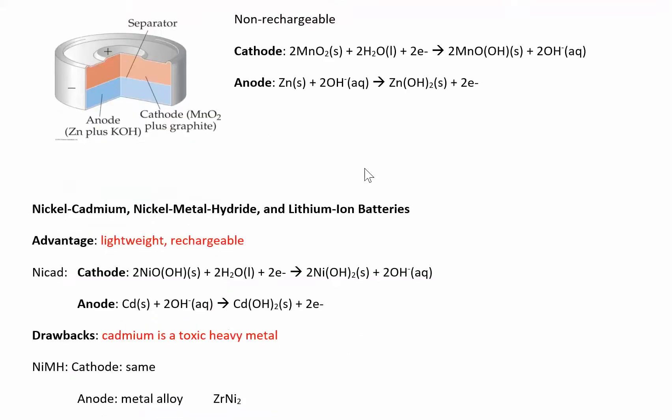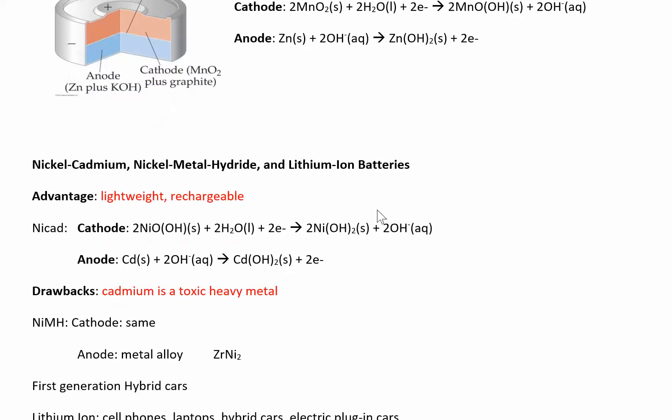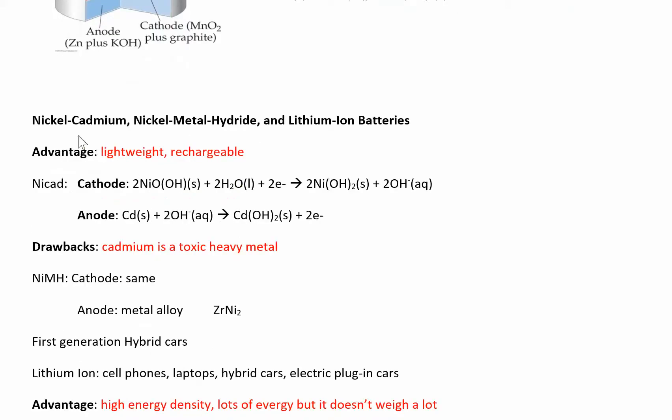Nickel cadmium, nickel metal hydride, lithium ion batteries - the first generation of rechargeable batteries were these nickel cadmium, NiCad batteries. I remember my first rechargeable, I think it was in my camera or something that I had to charge in the wall. The advantage of these things, they're lightweight and rechargeable. Disadvantages: cadmium is like a toxic heavy metal. None of these batteries are good to throw away, there's always some crap in there that you really don't want getting into the environment, but cadmium is particularly not cool. It's a toxic heavy metal.